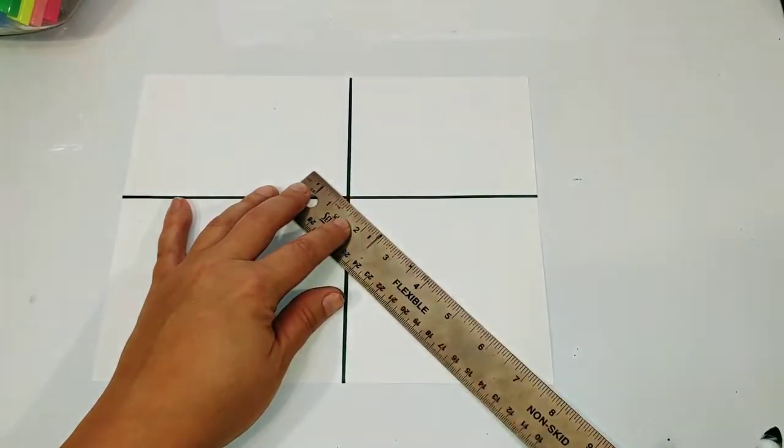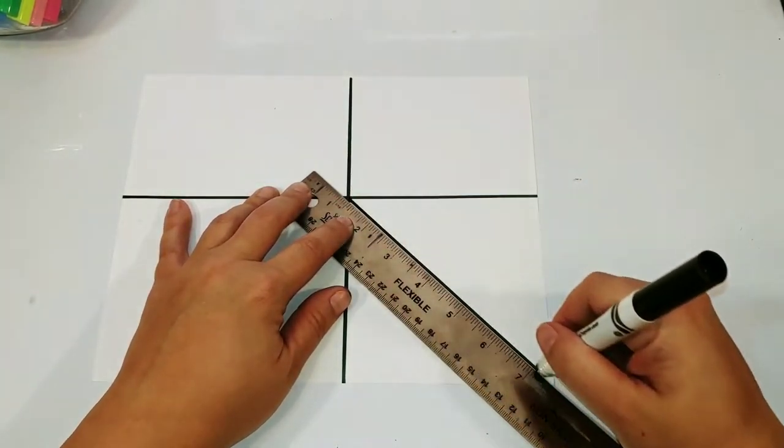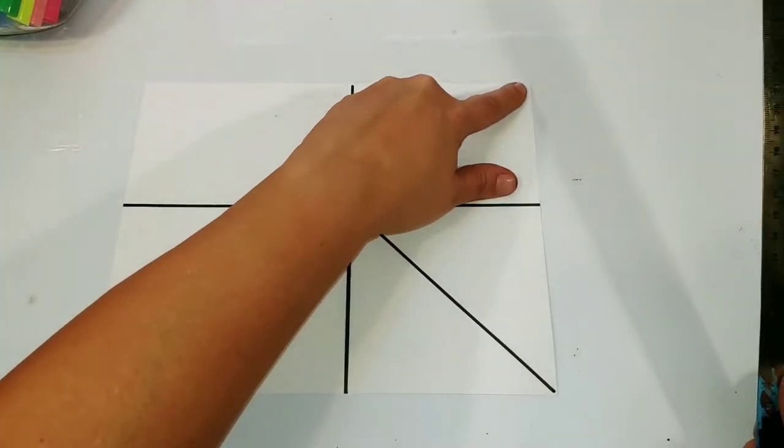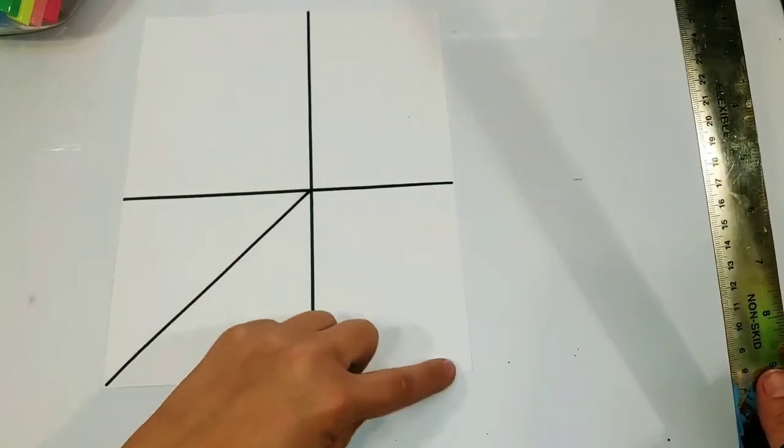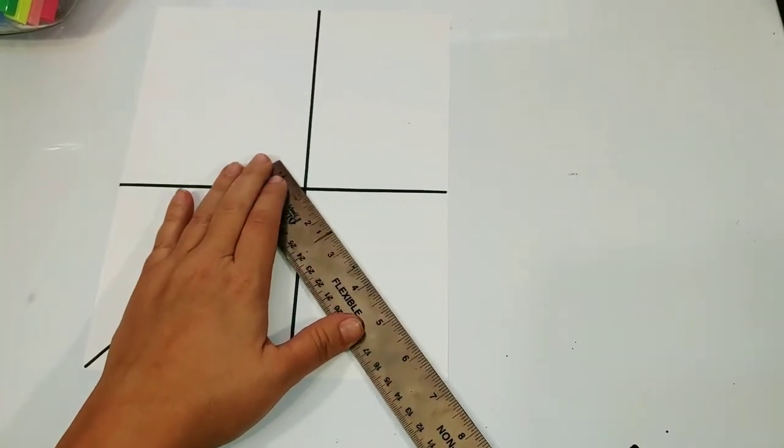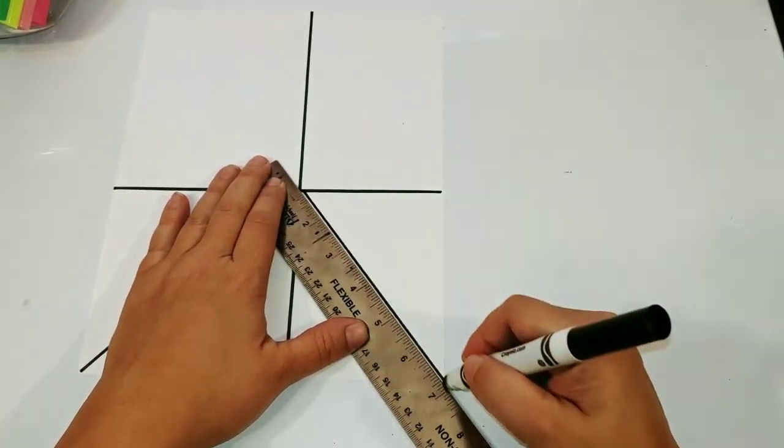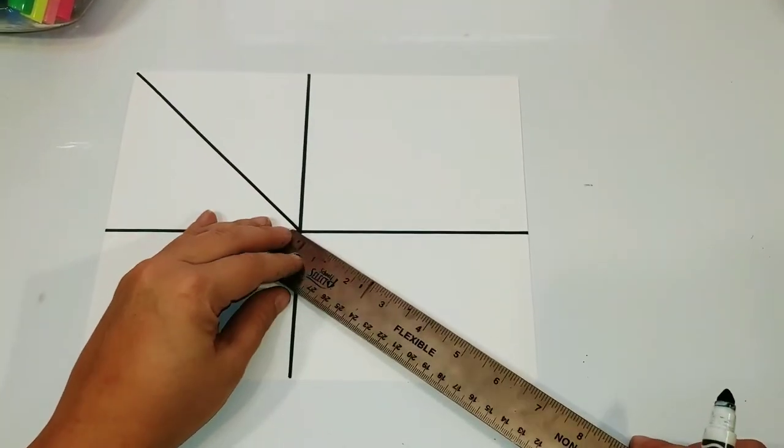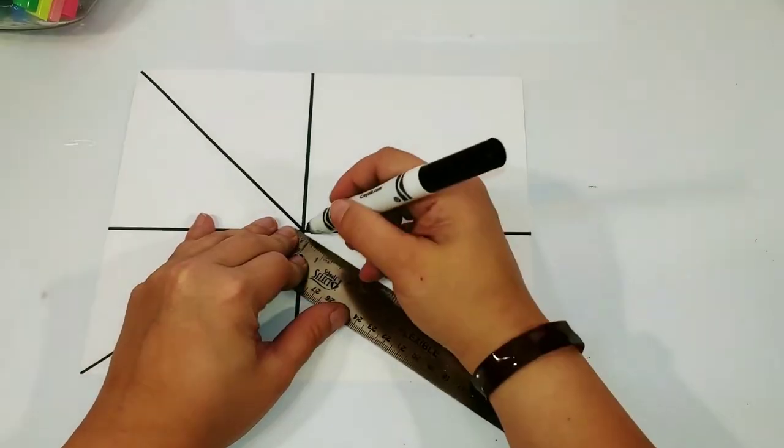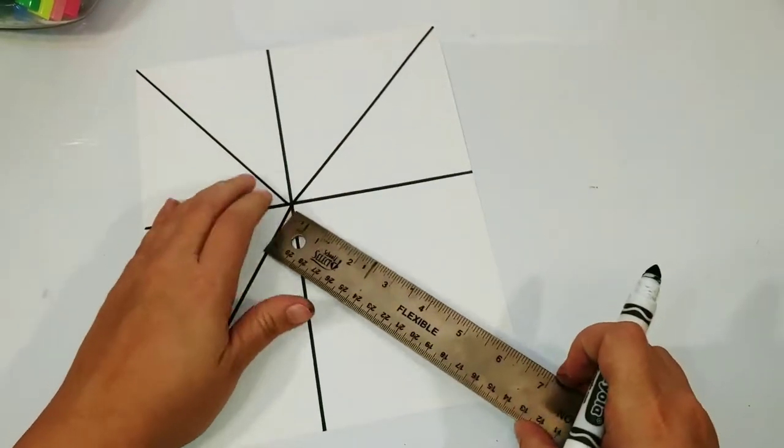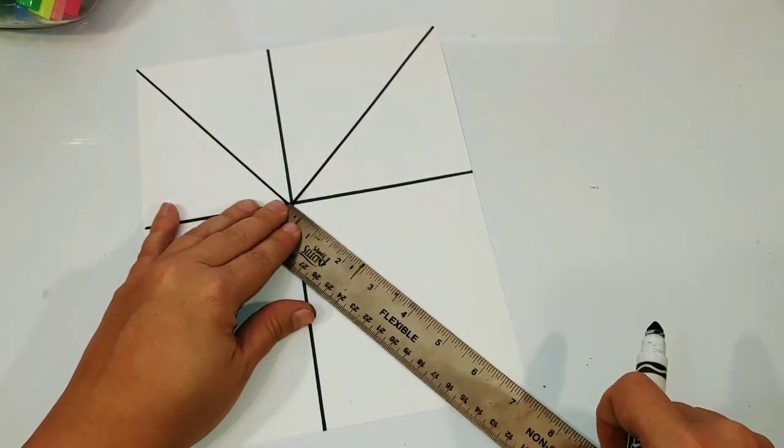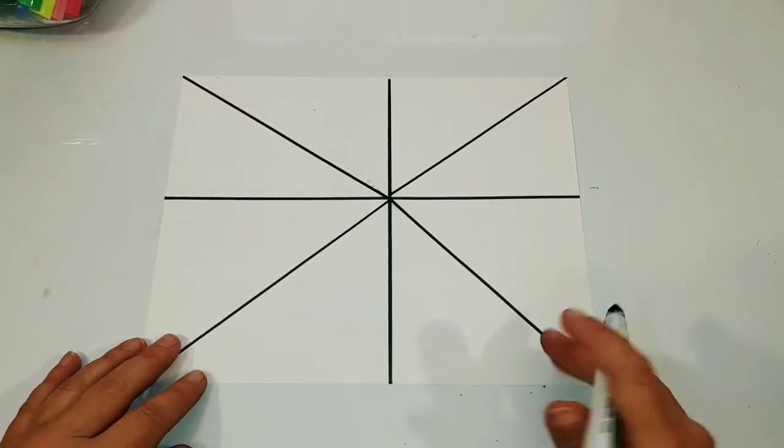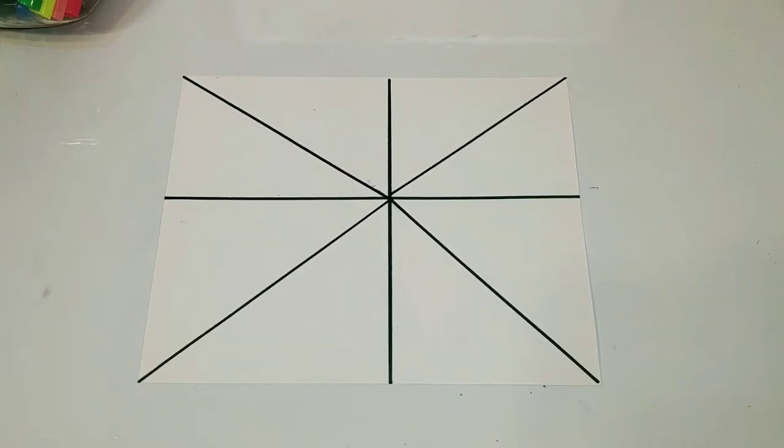Then we're going to take our ruler and we're going to go from the middle all the way out to the corner, where all the lines meet all the way out to the corner. We're going to do that in each box that we've made. So again, line it up at the middle and the corner, and that is the first step.